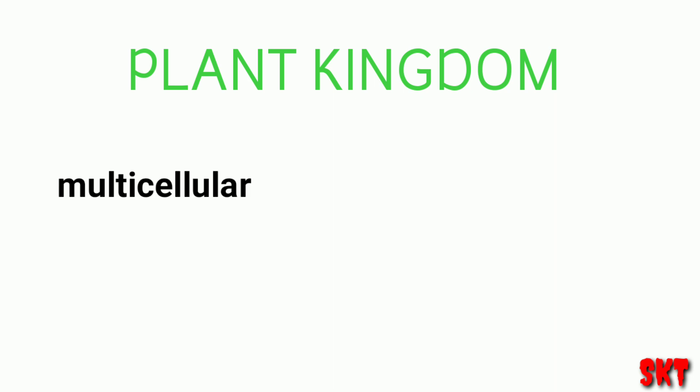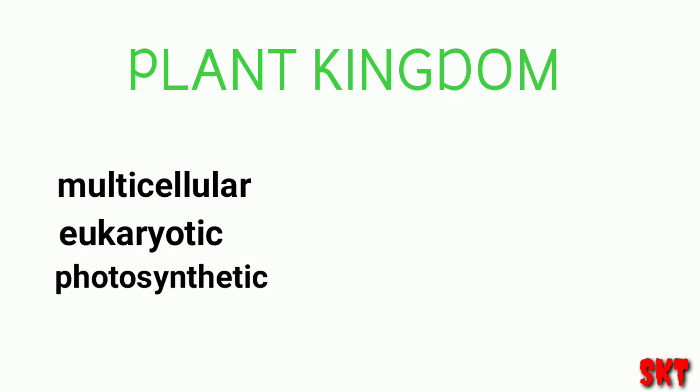Today we are going to study about the divisions in the plant kingdom and the type of sexual life cycles in the plant kingdom. This kingdom includes multicellular, eukaryotic, and photosynthetic organisms. They are broadly classified into cryptogamae and phanerogamae.